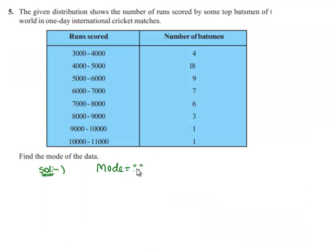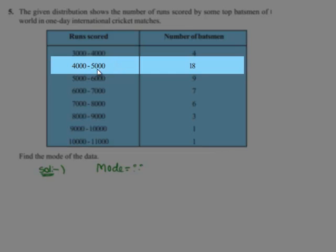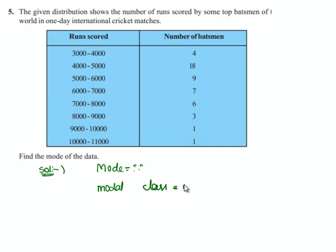Since the maximum number of batsmen have their runs scored in the interval 4000-5000, that is the frequency will be 18, hence the modal class is 4000-5000. The L, that is the lower limit, will be 4000.